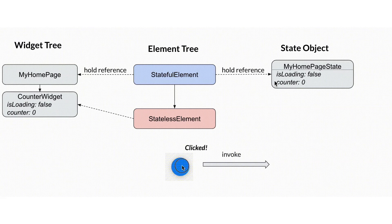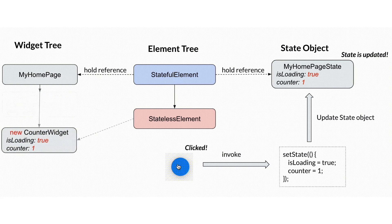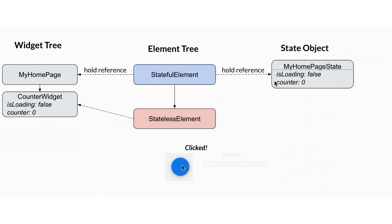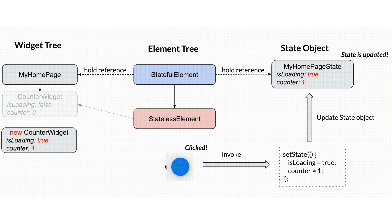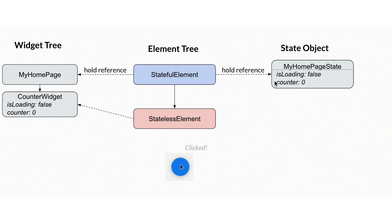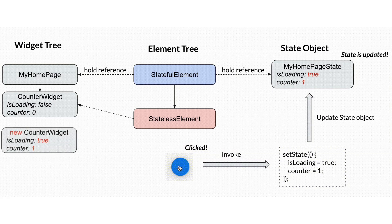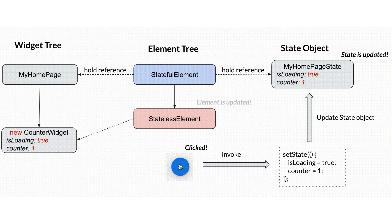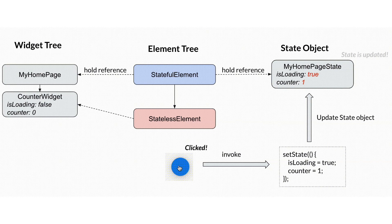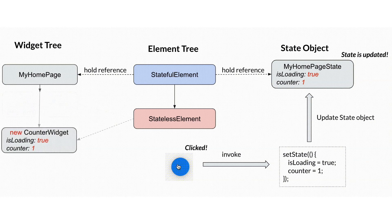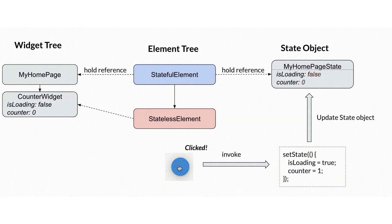We mainly care about the element tree. In the element tree, each Flutter widget corresponds to an element, and each element within the element tree has two specific purposes: first, holding the reference of parent and child widgets, and second, holding the state of the widget. The element tree is an internal representation of the widget tree that Flutter uses for performance and updating. For each widget in the widget tree, a corresponding element is created in the element tree.